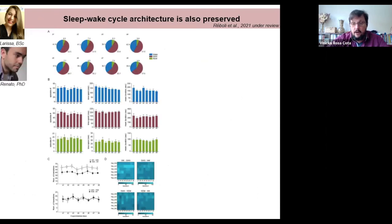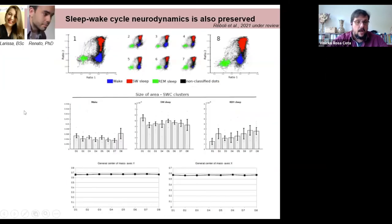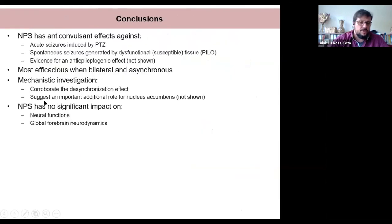What we found was actually nothing, hopefully. The proportion of stages was not different across all days of experimentation. The same goes for transitions between stages, for the spectral content. It changes in each different stage of the sleep-wake cycle, wakefulness to slow wave sleep and REM sleep, but it does not change spectral content, including the peak frequency in major rhythms regarding these sleep-wake stages. Also, the state map is preserved across all days. It's essentially the same. If you measure the area of these clusters, it does not change significantly, and the center of mass of all this point also does not change. In conclusion, we saw that NPS has no significant impact on neurofunctions and global forebrain neurodynamics, which led us to better understand and have a better grasp of NPS.